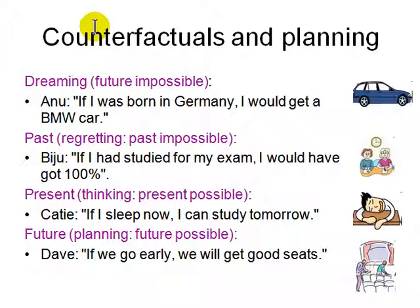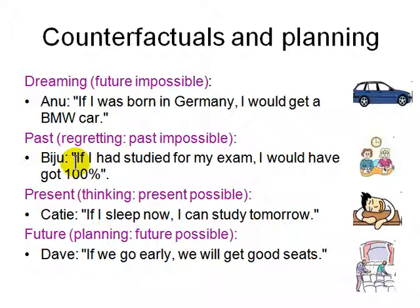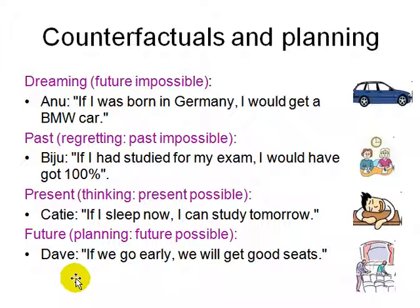Let's look at counterfactuals — you can even believe in things which are not possible. Anu: 'If I was born in Germany, I would get a BMW car' — this is dreaming; a future impossible, because she is not born in Germany. Biju: 'If I studied for my exam, how would I have got 100%?' — he didn't study but assumes that if he had, he would have got 100%. Katie: 'If I sleep now, I can study tomorrow' — future possible, she is thinking about it. Dave: 'If we go early, we will get good seats' — planning for the future.